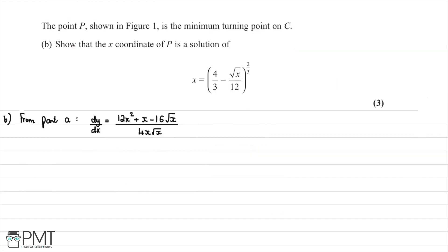In part B, we're told that point P is the minimum turning point on C, and we're asked to show that the x-coordinate of P satisfies x = (4/3 − √x/12)^(2/3). When asked about minimum turning points, we instantly think to set dy/dx = 0, since stationary points occur where the derivative equals zero.